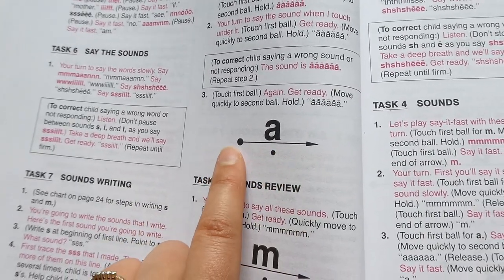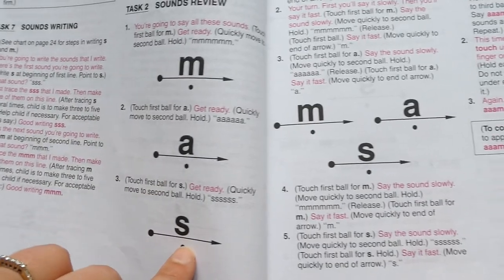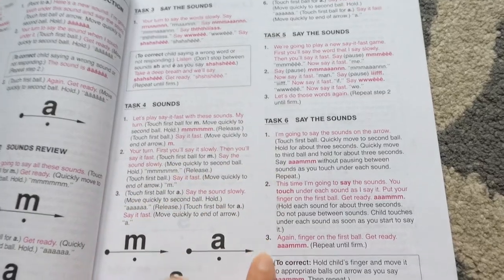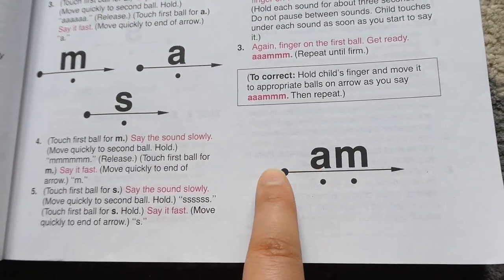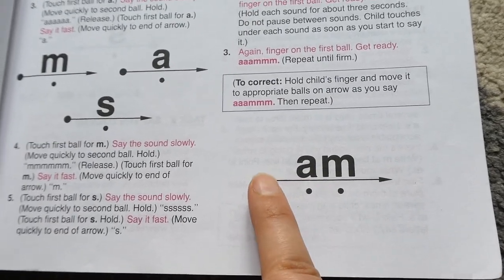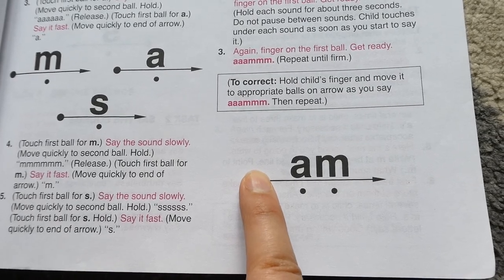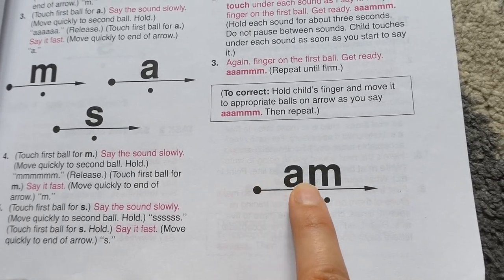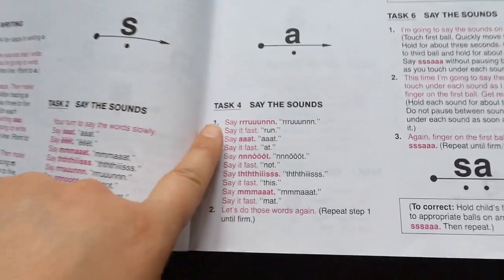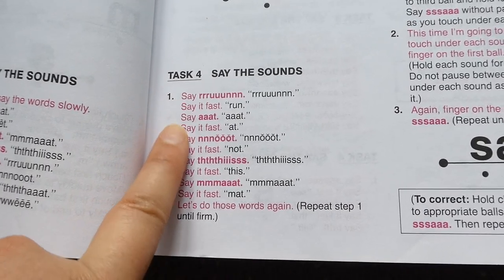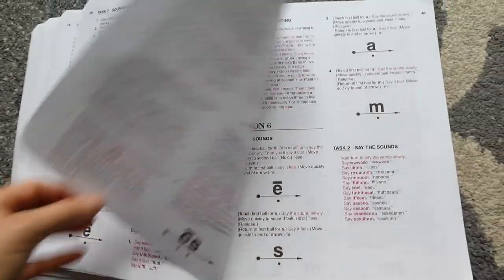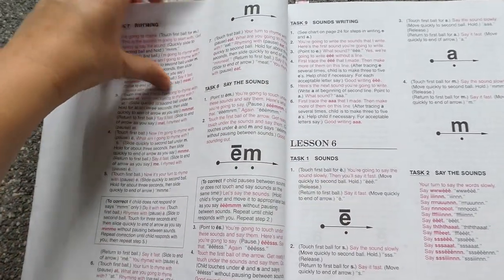So lesson two starts by reviewing those two sounds and doing kind of the same thing over again. And then lesson three, we're learning a new sound. Then they're also right away learning how to say their first word, am, saying that smoothly, saying it slow. When you're telling your child to do it, you can have them put their finger on the dot and then say the sounds as they slide their finger towards the arrow. Again, we are constantly working on these saying it slow, saying it fast.